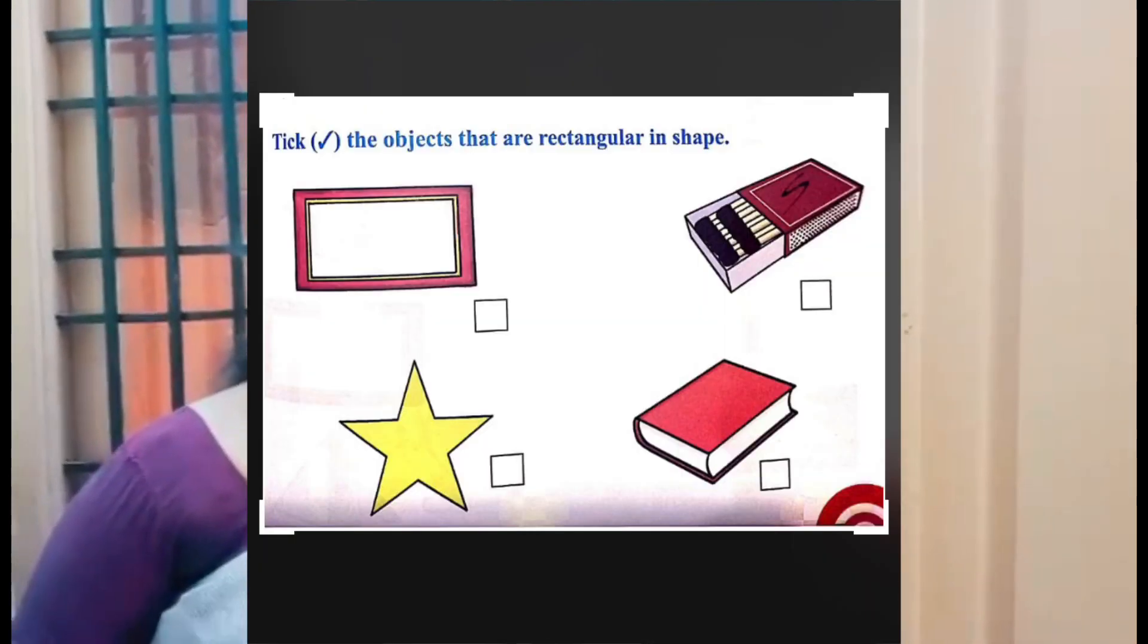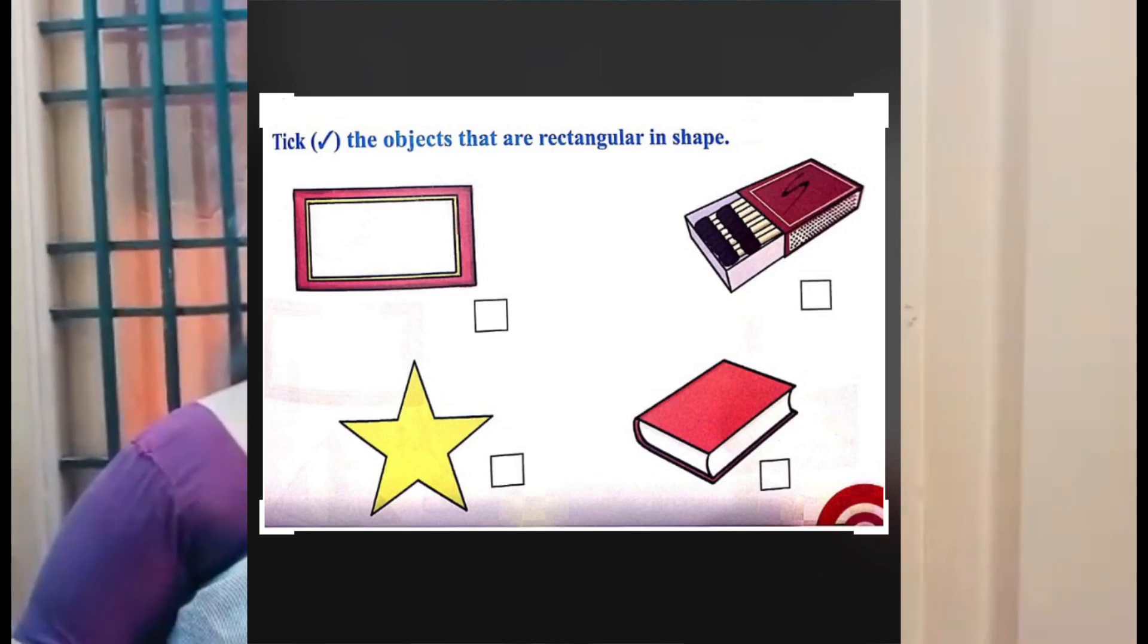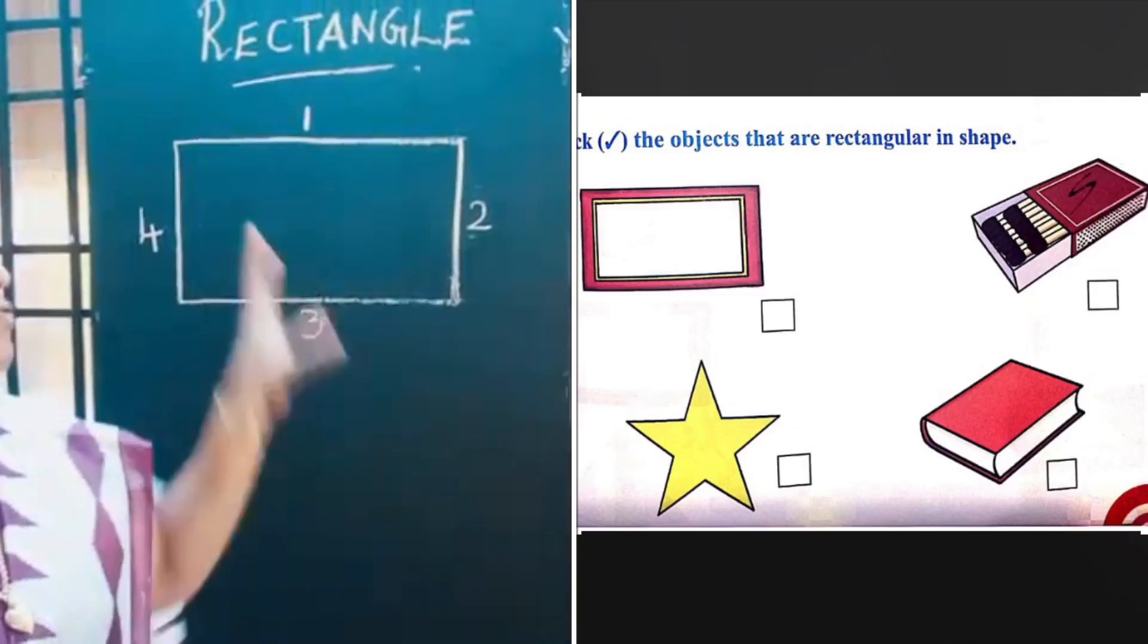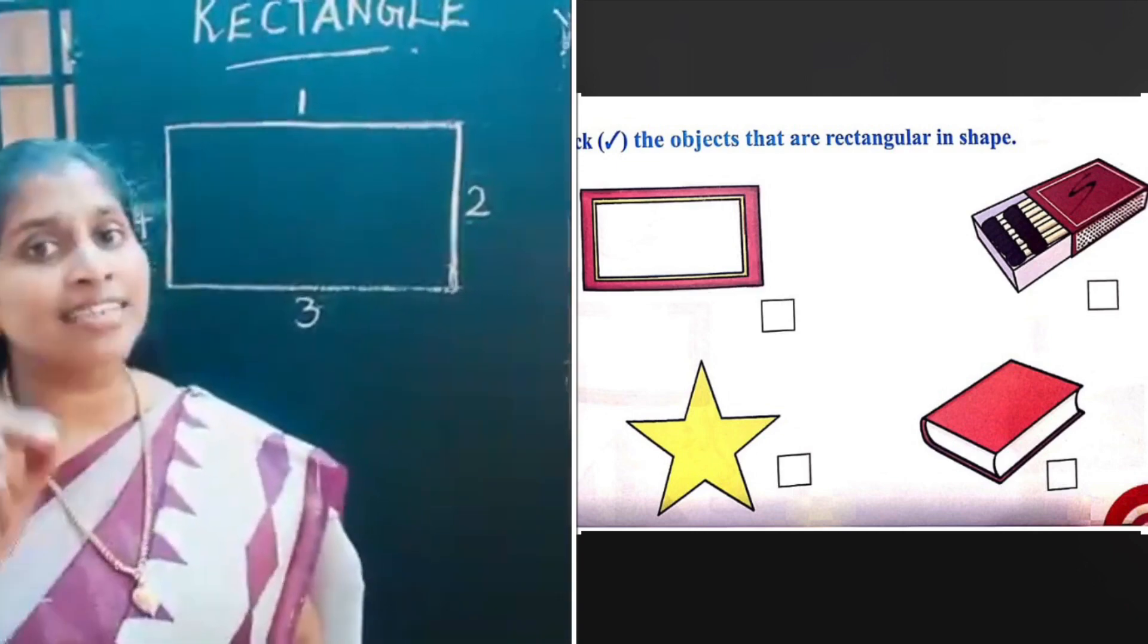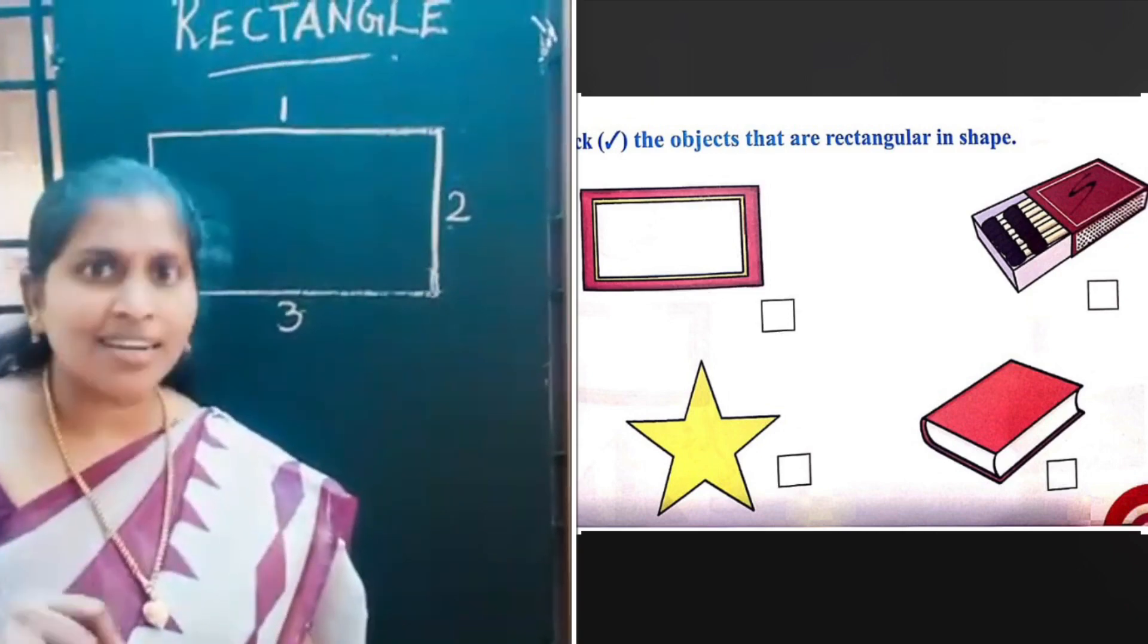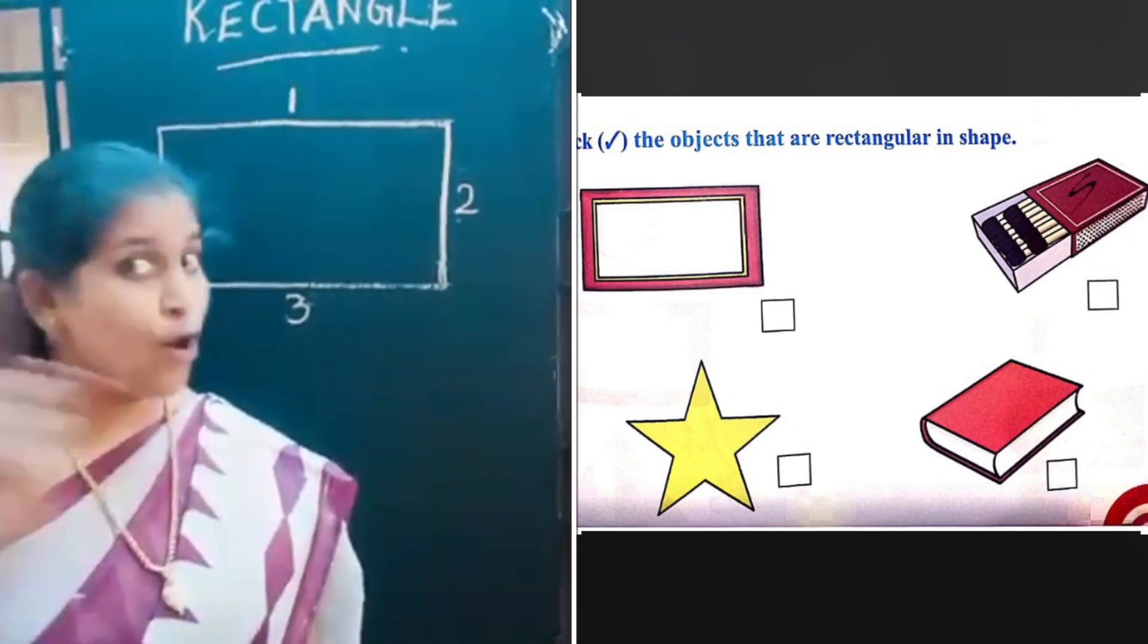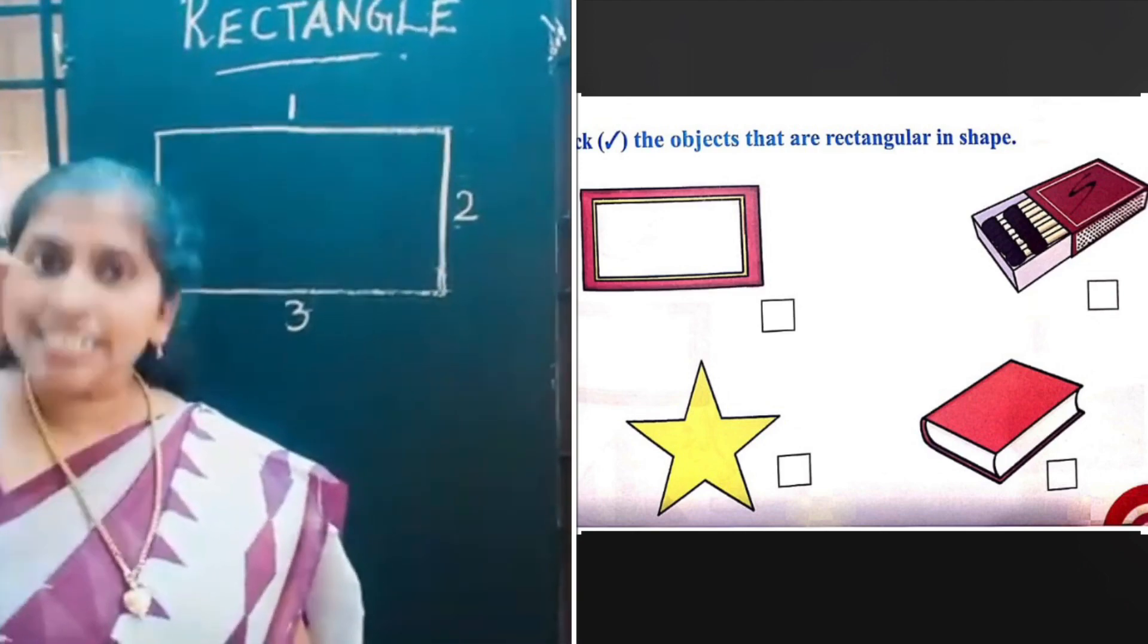Next one is pick the objects that are rectangle in shape. The first one is like a board, the shape of the board is rectangle, so pick that. The matchbox is in rectangle shape, pick that. Next one is star. Is that rectangle in shape? No, that is not rectangle in shape. The last one is book, it is rectangle in shape, pick that.